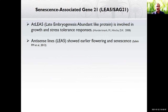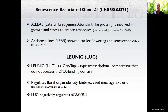The second protein is LEA5 or senescence-associated protein, involved in growth or stress tolerance. The antisense line showed early flowering and senescence, making it another interesting target. The third is LUG — a transcriptional co-repressor that regulates floral identity, embryo, and seed development, and also negatively regulates AGAMOUS. These three genes are my focus, along with other genes important in embryogenesis.